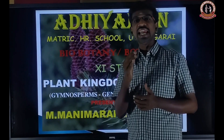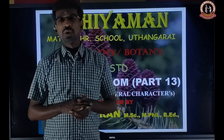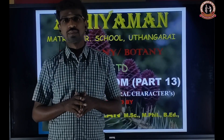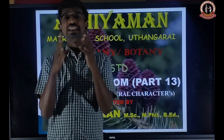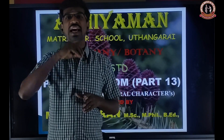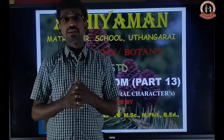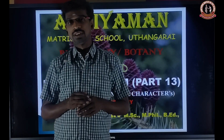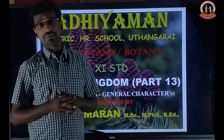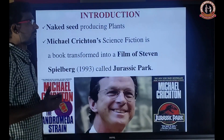So actually what is the Gymnosperm? It is a naked seeded plant. It is a flowering plant, but it is a naked seeded plant. So what is a naked seeded plant? That means the ovary is absent. The ovary wall is absent. The ovule is directly exposed to the atmosphere. The ovule is directly born on the megasporophyll and it is not surrounded by ovary wall. So that is why it is a naked seeded plant, and it comes under the flowering plants because it produces seeds.